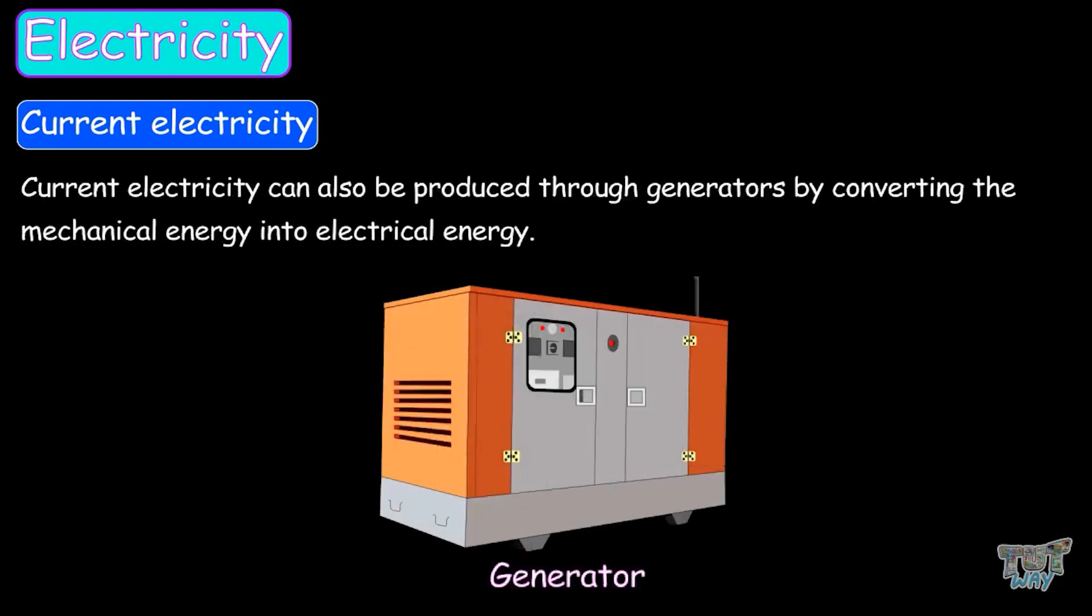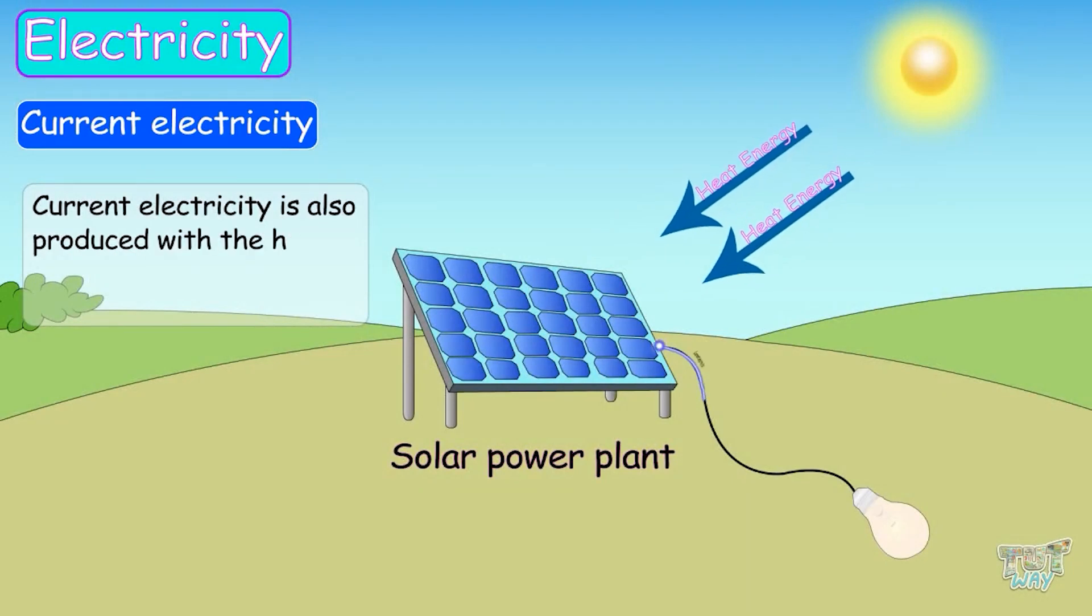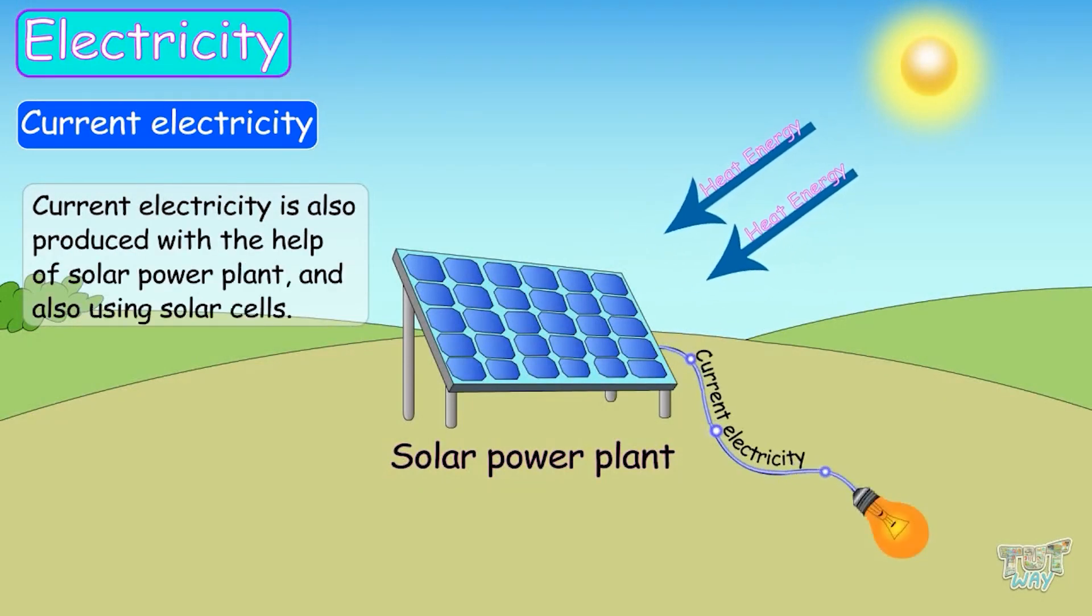Current electricity can also be produced through generators by converting the mechanical energy into electrical energy. Current electricity is also produced with the help of solar power plants and also using solar cells.